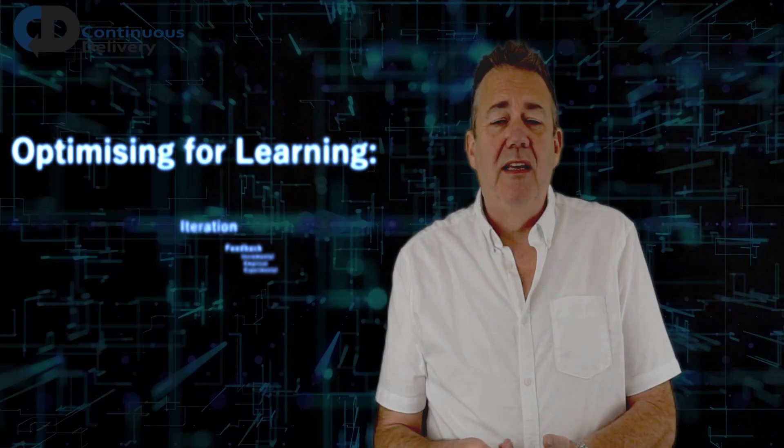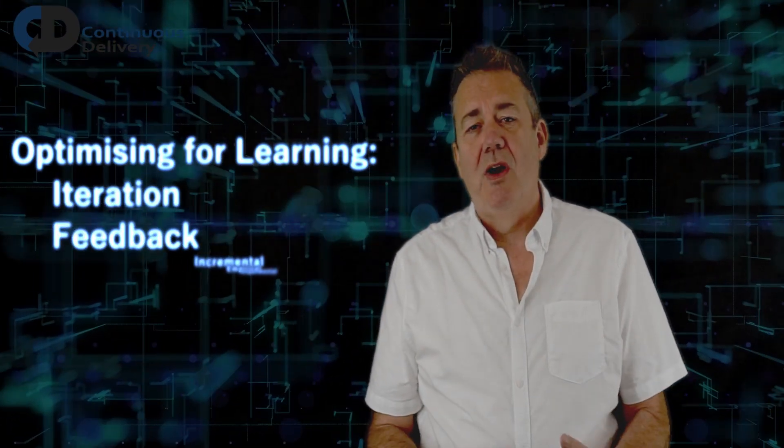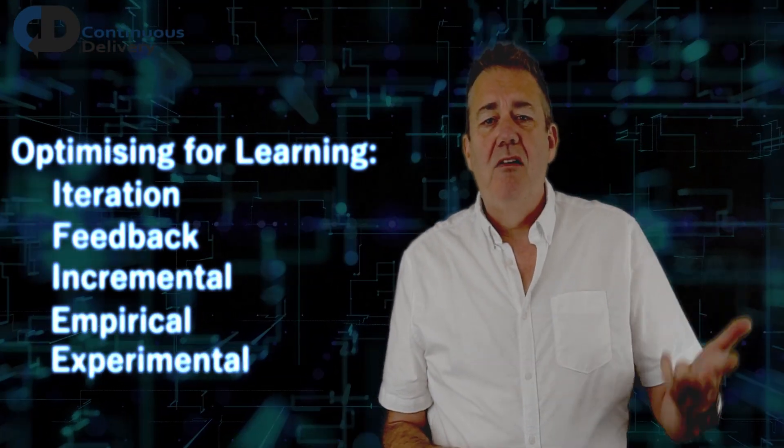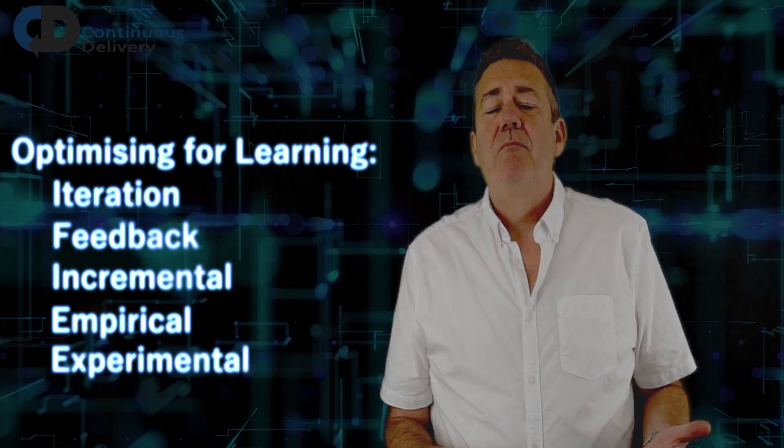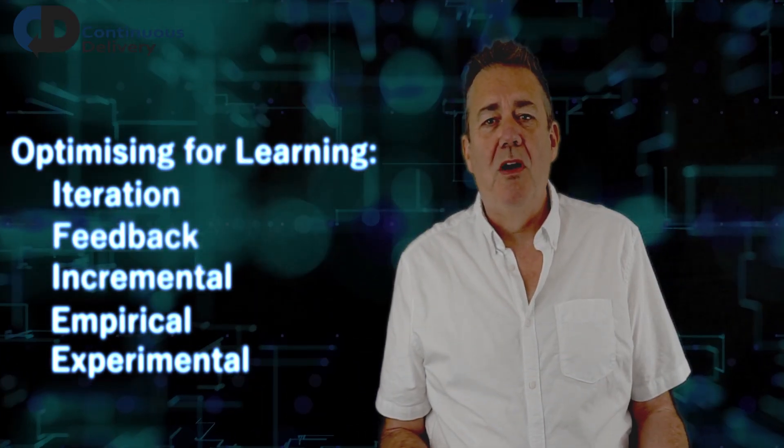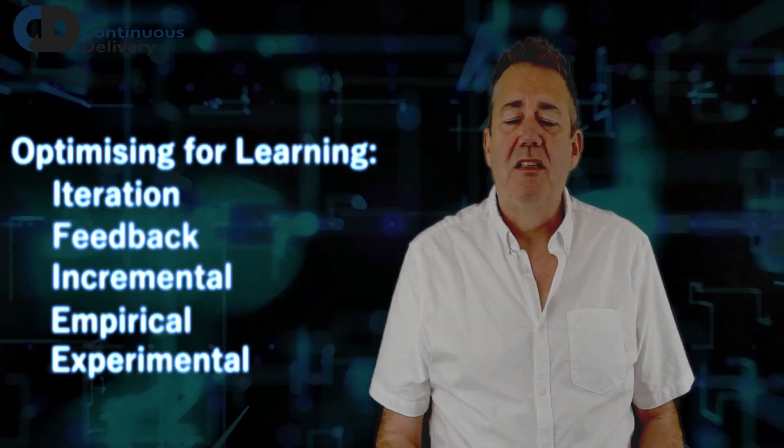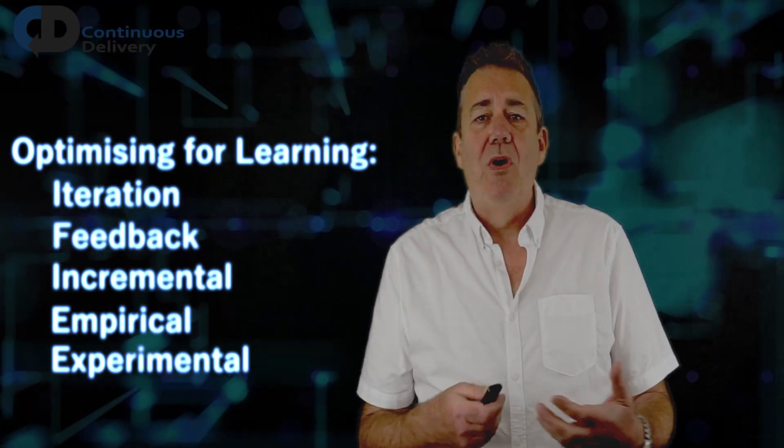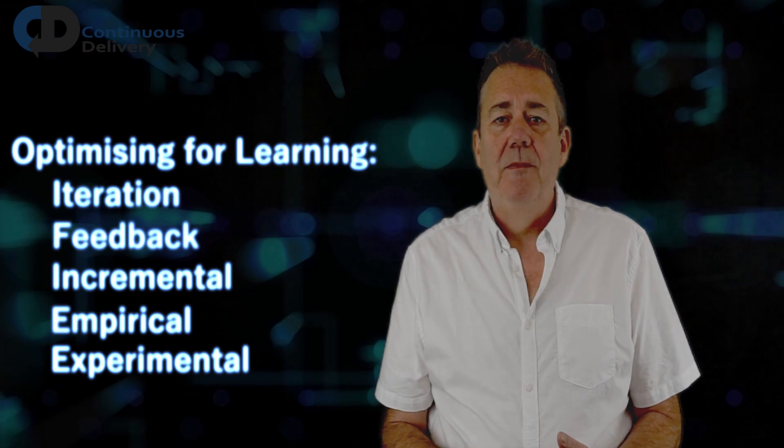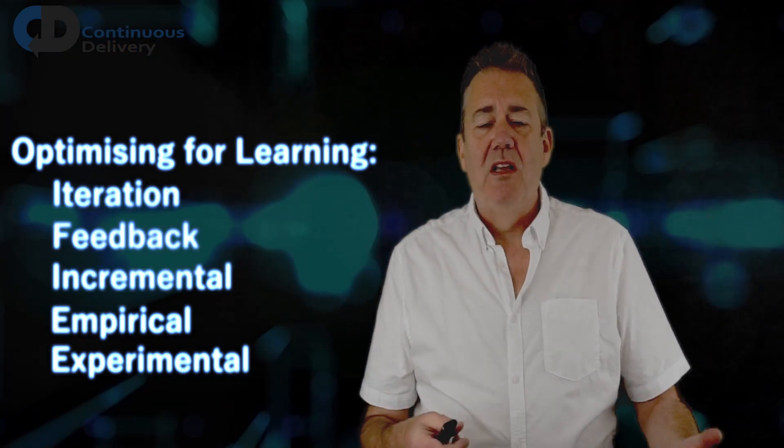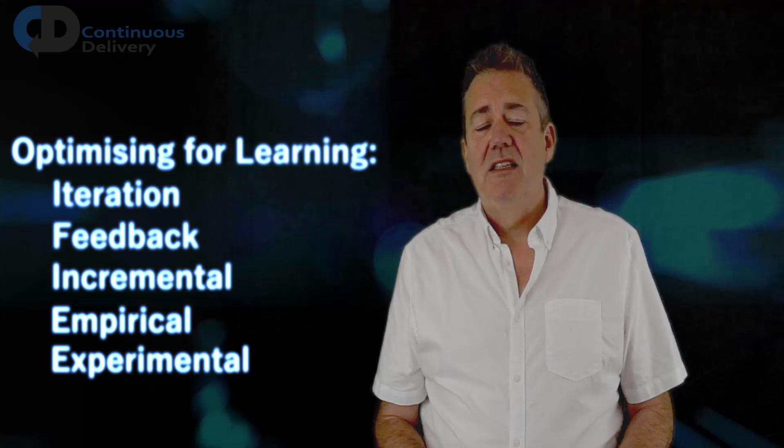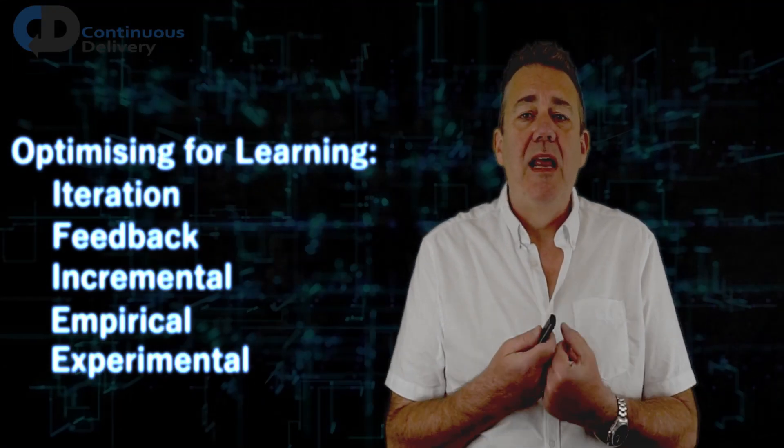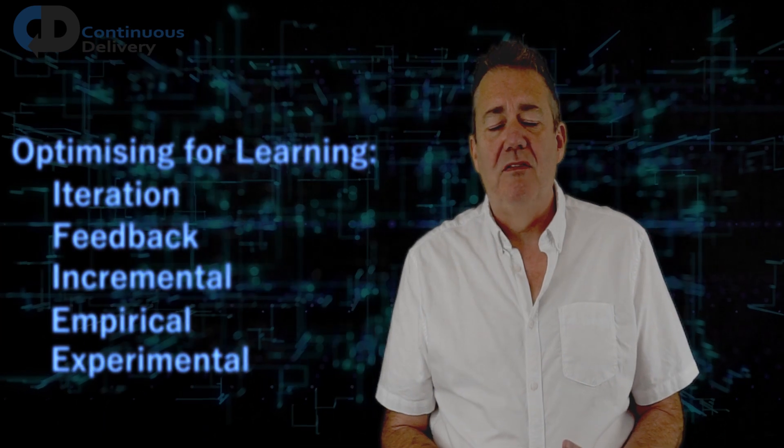In order to be good at learning, if we want to optimize to be really great at learning, we need to take iteration, feedback, incremental development, empirical discovery and experimental approach as part of our day-to-day activities, the life and breath of our discipline. If we are going to be experts at learning as we should be, this is what it takes, these are the disciplines that we need to bring in as natural parts of our development efforts.